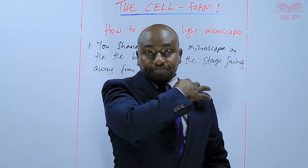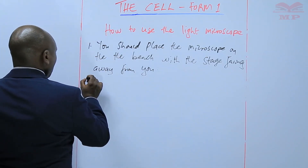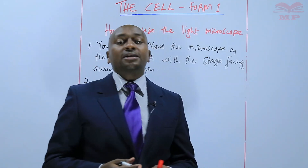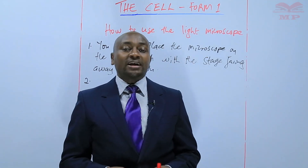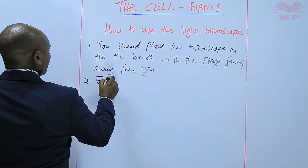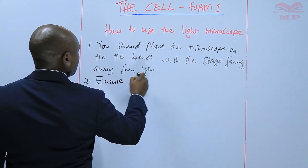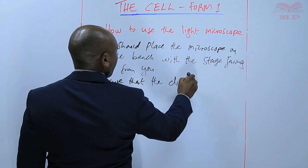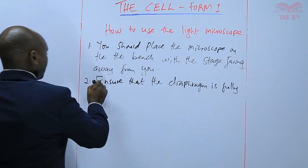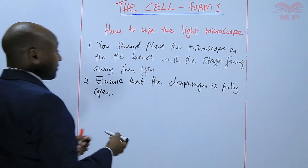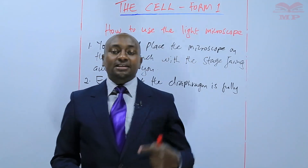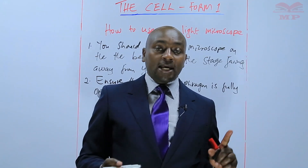The other thing that the user of the microscope should make sure he or she does is to make sure that the diaphragm is fully open. The diaphragm is the one that controls the amount of light that is getting to the condenser and hence the stage, and therefore should be fully open.